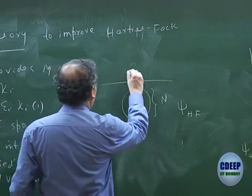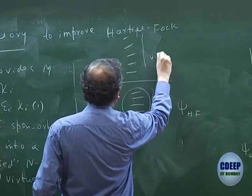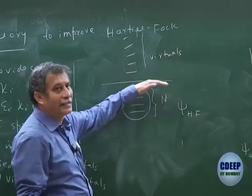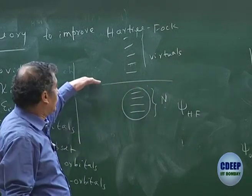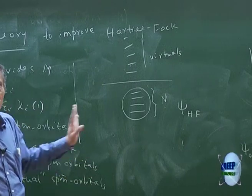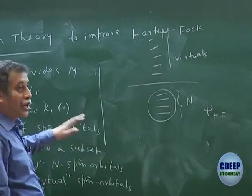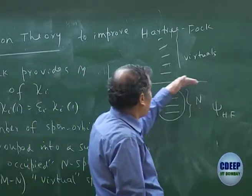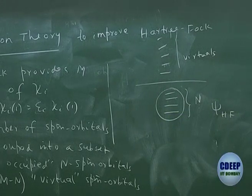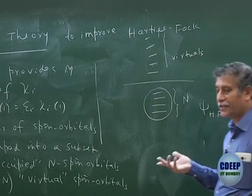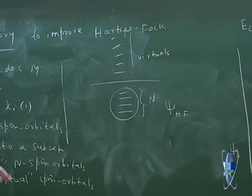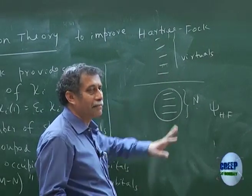Then I have M−N virtual orbitals. This is an imaginary line — a boundary between occupied and virtual, not an orbital level. In solid state this is called the Fermi level, with a gap between valence and conduction band. In quantum chemistry we do not call it the Fermi level, but it is somewhere in between.